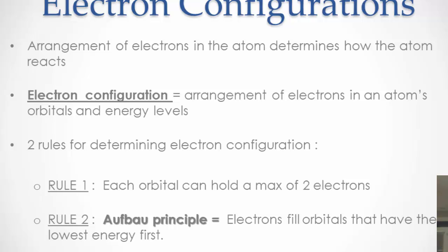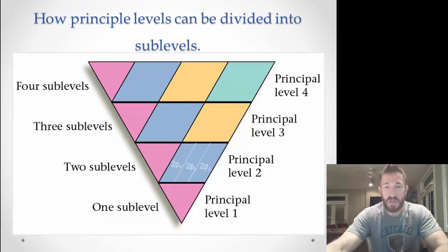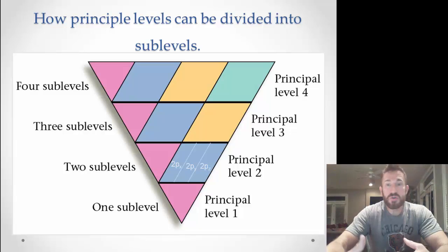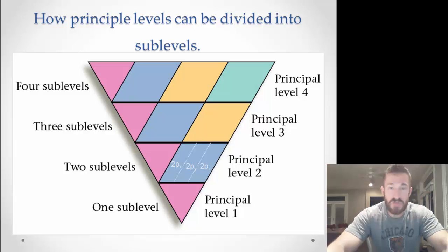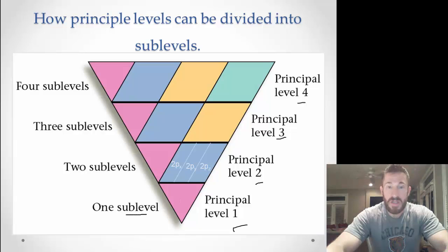We're going to use something we call an Aufbau diagram. So how things are categorized: first we have the energy levels — energy level one, two, three, and four. These are called principal energy levels. Energy level one has one sublevel, and that one is called 1s. Energy level two has two sublevels: 2s and 2p.